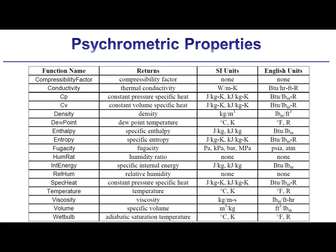Most of the thermodynamic and transport properties that are of interest for other ideal gas fluids, like specific enthalpy and thermal conductivity, are also available for air-water vapor mixtures when you are using the fluid air_H2O, and all of these functions are shown in this table. There are also other property functions specific to psychrometrics in this table, including the relative humidity (REL-HUM function), and the humidity ratio (HUM-RAT function).